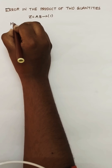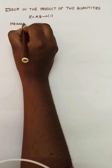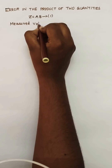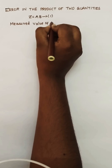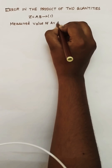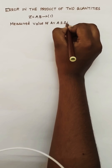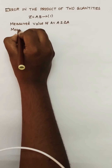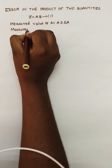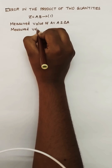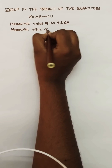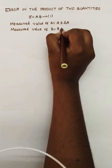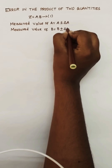So what is the measured value of a? The measured value of a is a plus or minus delta a. This delta a is the absolute error. Same way, the measured value of b is b plus or minus delta b.